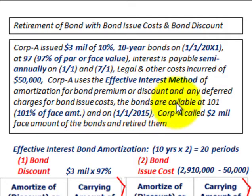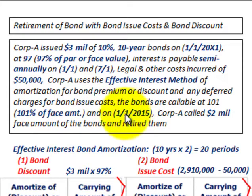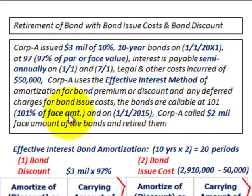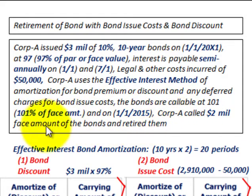The bonds are callable at 101% of the face amount of the bond. On 1-1-2015, five years later, Corporation A called $2 million of the face amount of the bonds and retired them. So there were $3 million outstanding, but they recalled $2 million worth of those bonds.